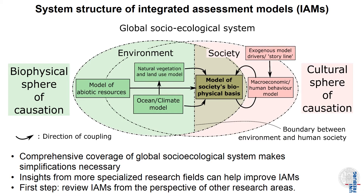When reviewing integrated assessment models, we first have to become familiar with their overall structure. A central feature of integrated assessment models is their comprehensive coverage of the global socio-ecological system. We have in those models a description of societies by a physical basis with a traditional focus on the energy system. We also have modules for the different environmental mechanisms, including the natural vegetation, the climate system, and abiotic resources. These models are driven by a macroeconomic module that links the services provided by society's metabolism to the needs of the population. With such comprehensive coverage, those models need to make gross simplifications of individual aspects to be able to run as a whole.